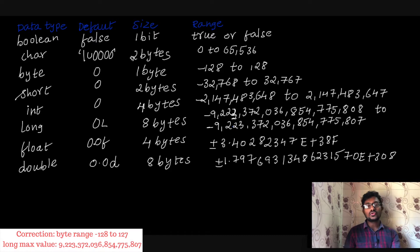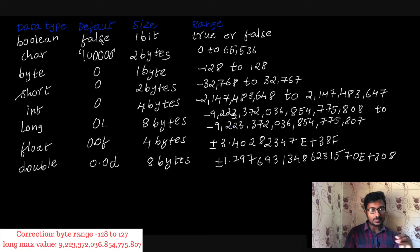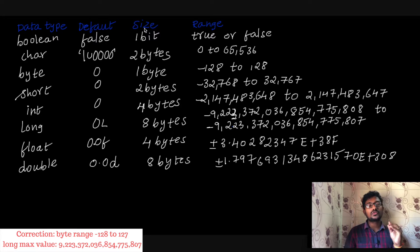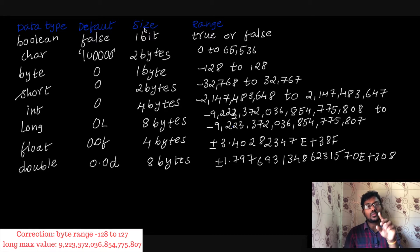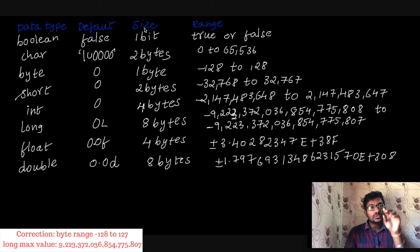Here are the data types and differences. There are eight primitive data types. For boolean, the default value is false. Java assigns false as the default boolean value. The size is only one bit. A bit is the smallest, basic unit of memory. Eight bits make one byte.